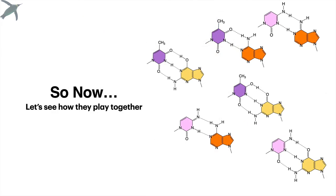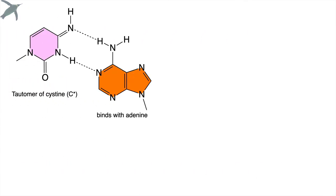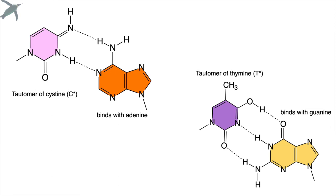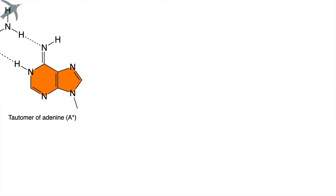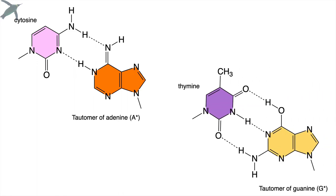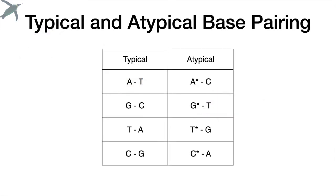Now you're ready to see how these play together. The tautomer of cytosine — C star — binds with adenine. And the tautomer of thymine — T star — binds with guanine. The tautomer of adenine binds with cytosine, and the tautomer of guanine binds with thymine. This explains why they do this. These are the structures, but what we're really interested in biologically has more to do with what happens to the DNA — typical and atypical base pairings.